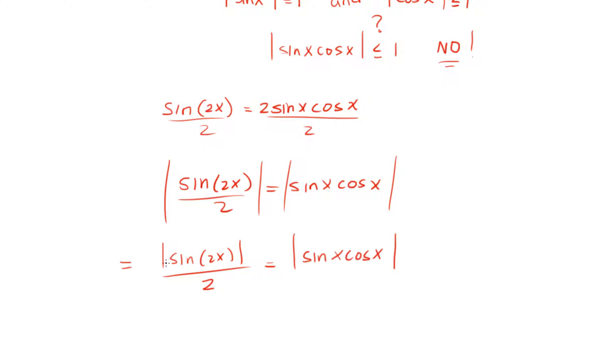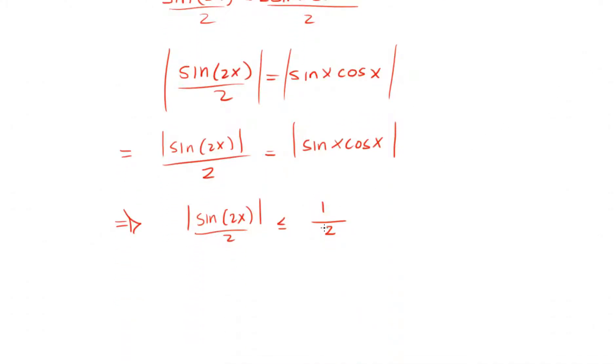Therefore, we know that the absolute value of sine of 2x is less than or equal than 1. Hence, sine of 2x over 2 is less than or equal than 1 over 2. If we divide by 2, we get that this multiplication is less than or equal than 1 half.